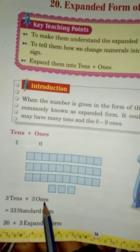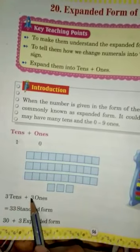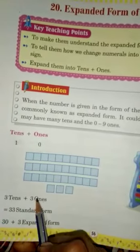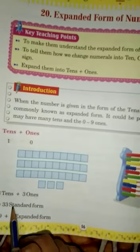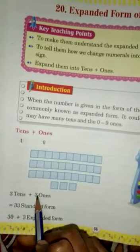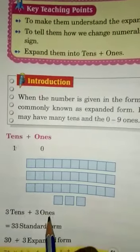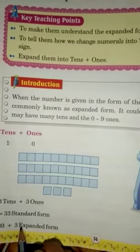Now come to the next example: three tens plus three ones. That means three in the tens place and three in the ones place. In standard form, we write thirty-three. And in expanded form: three tens means thirty, plus three ones means three. So thirty plus three.